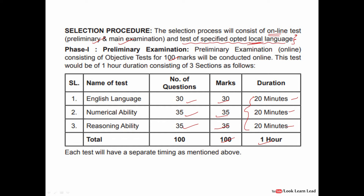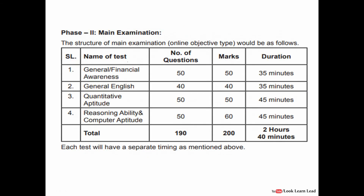After preliminary, you will have a mains exam. The three sections from prelims are the same, but in reasoning there is also computer aptitude, and you will have general and financial awareness. The main exam is of two hours 40 minutes and 200 marks, with 190 questions — meaning some questions are worth two marks.